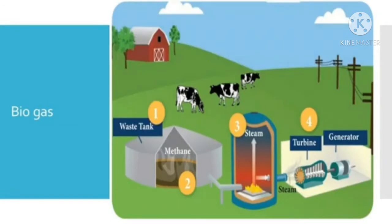Biogas is a mixture of methane and carbon dioxide. Biogas is produced by the decomposition of plant and animal waste which form the organic matter. The breaking down of organic matter in anaerobic conditions, that is in the absence of oxygen, leads to the formation of biogas. Biogas is an example of a renewable source of energy.